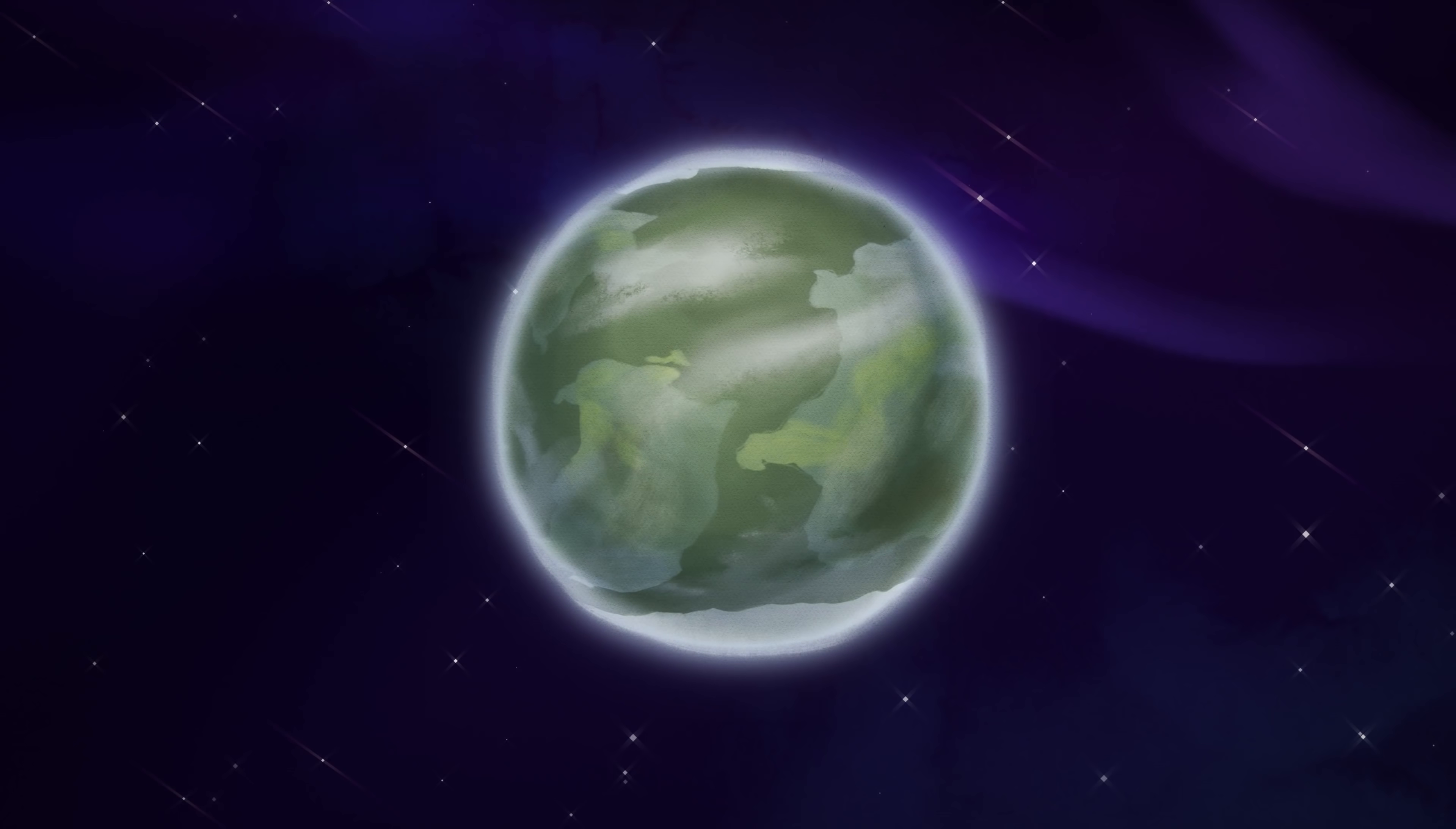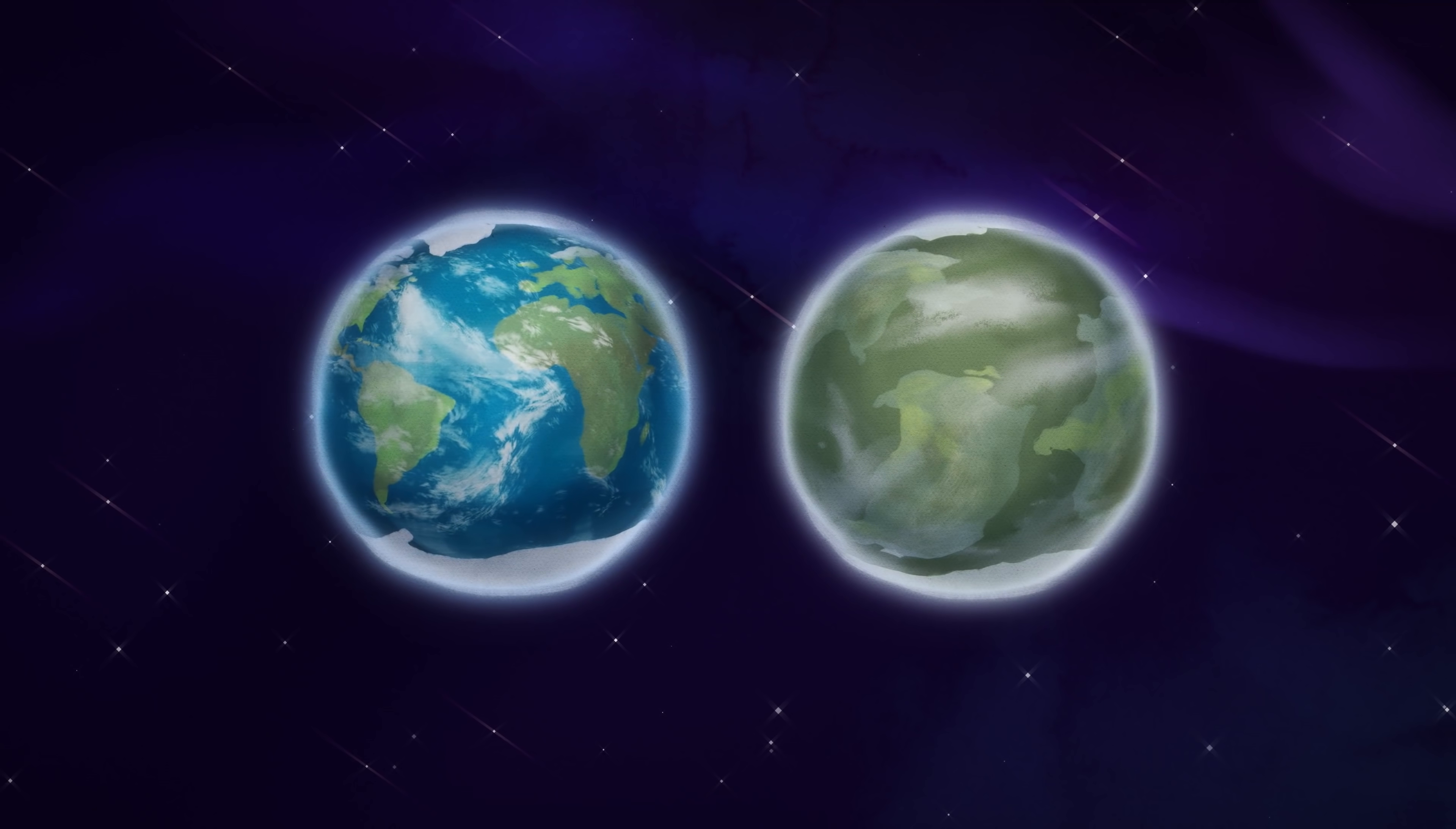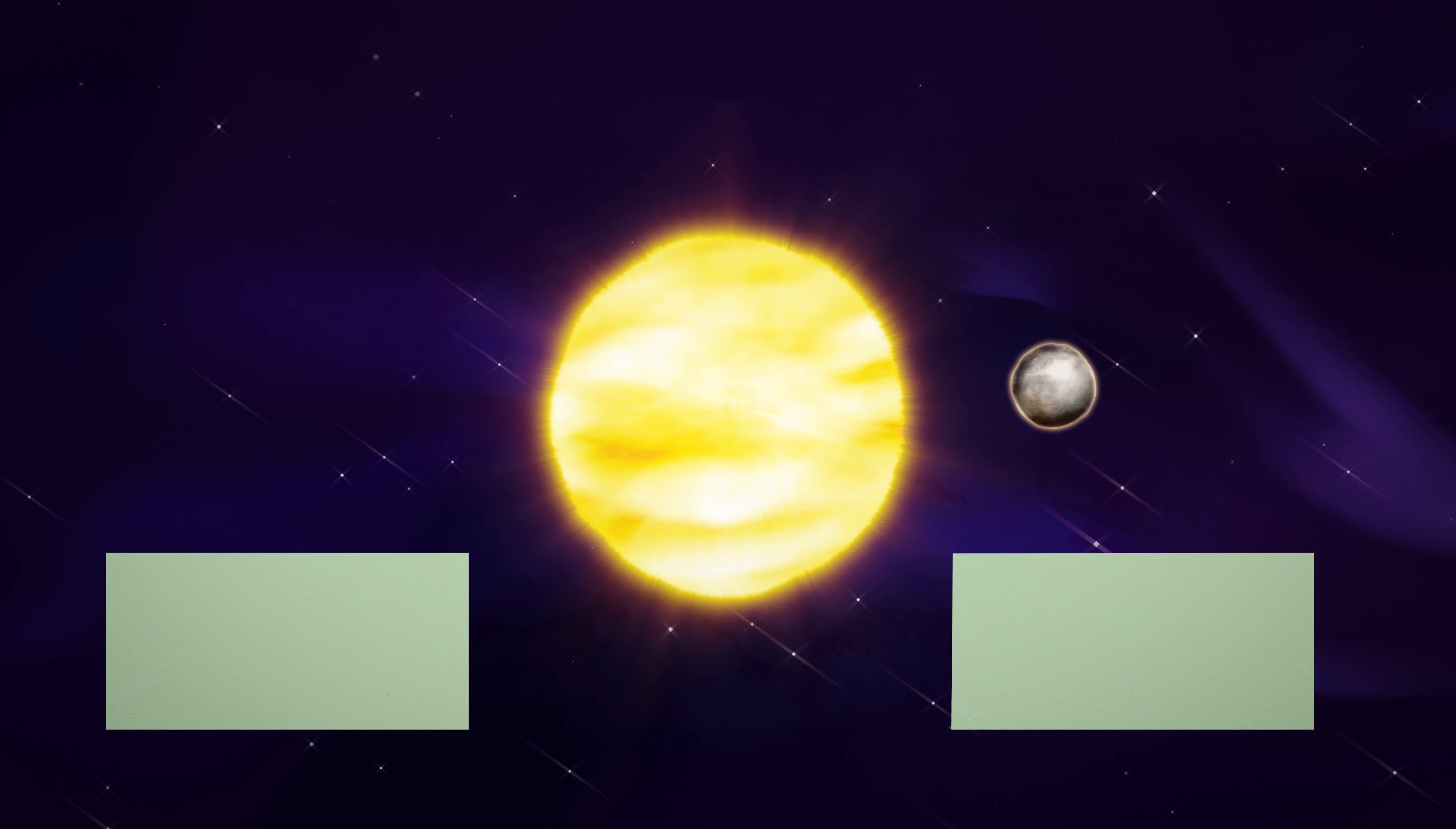We think the most life-ready planets are the ones most similar to Earth, with a range of qualities that include similar size and composition to our planet, and being at the right distance from their stars to have liquid water on the surface. These qualities are really challenging to observe from so far away. But we're working on it.